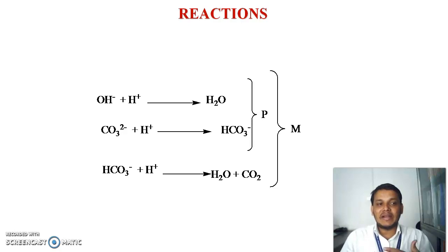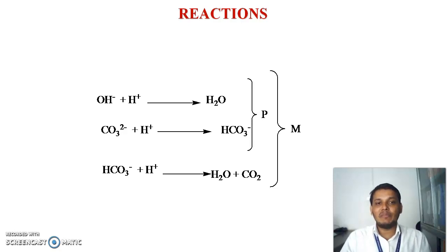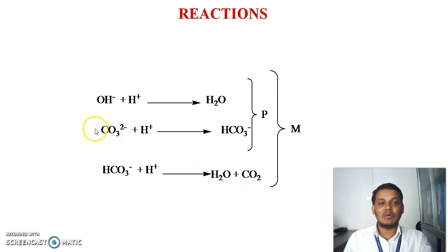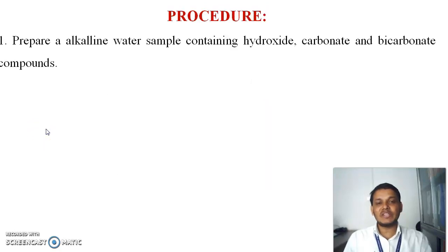A common question is: why can carbonate be titrated in the presence of both methyl orange and phenolphthalein indicators? Because with phenolphthalein, carbonate is half-neutralized — carbonate plus H⁺ gives bicarbonate. Then the remaining bicarbonate is again neutralized to give H₂O plus CO₂ in the presence of methyl orange. Therefore, carbonate can be titrated with both phenolphthalein and methyl orange indicators.